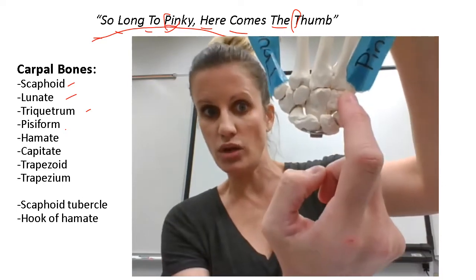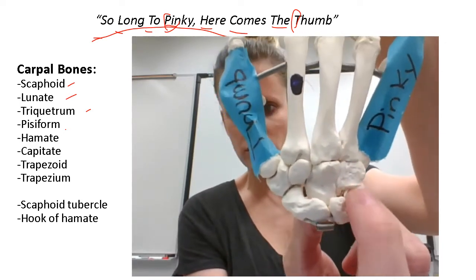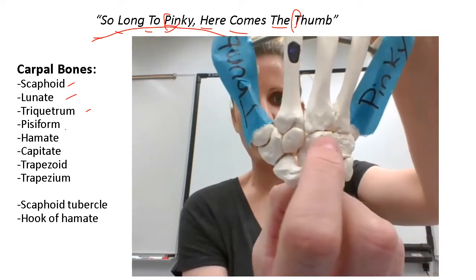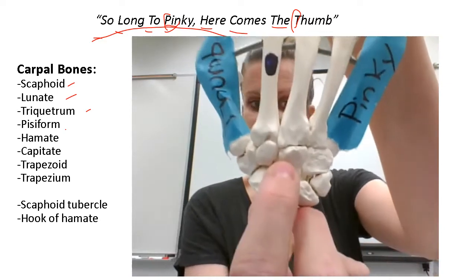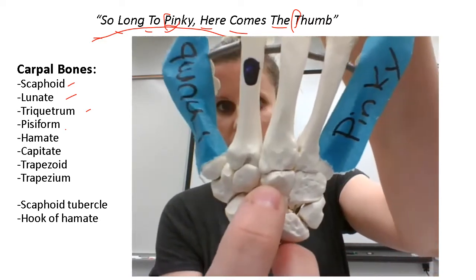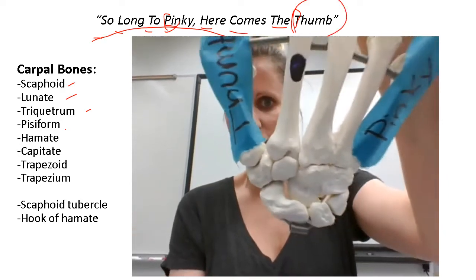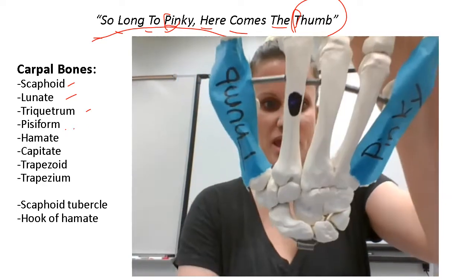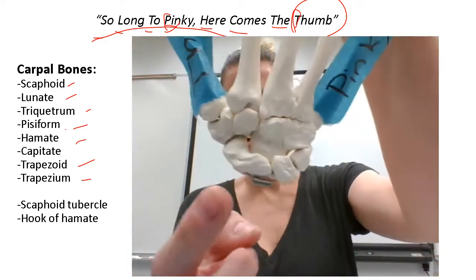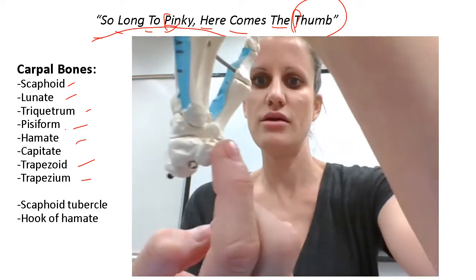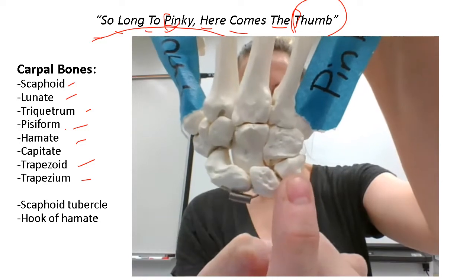Now we move up closer to the fingers for the distal row. 'Here comes the thumb' — H for hamate: the bone closest to the pinky is the hamate. Then C for capitate — capitate is pretty big. Then trapezoid and trapezium. Notice we ended up right back at the thumb: trapezium and thumb go together, just like pisiform and pinky.